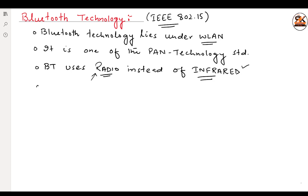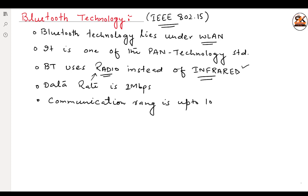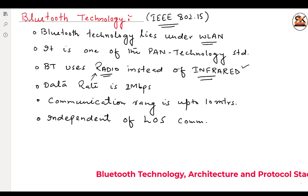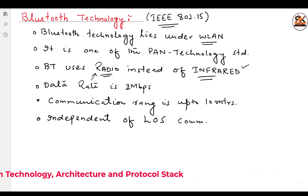The data rate in Bluetooth standard is 1 MB per second, and it can provide communication up to 10 meters. Bluetooth technology is independent of line-of-sight communication, which means it can even penetrate walls and go beyond any kind of obstacle within a range of approximately 10 meters.